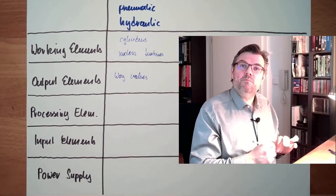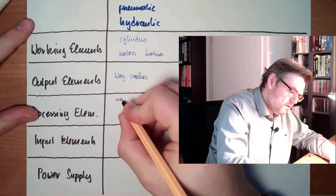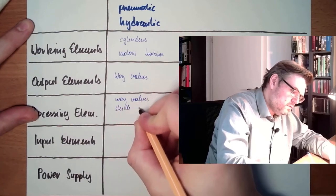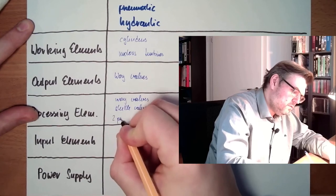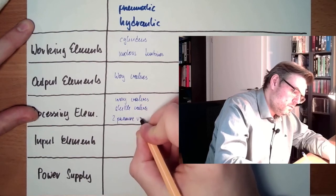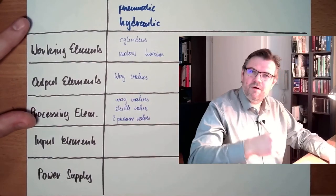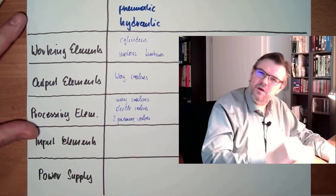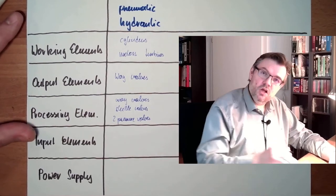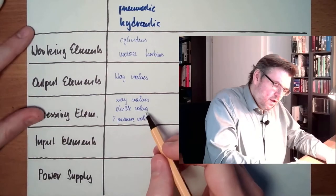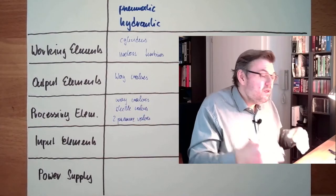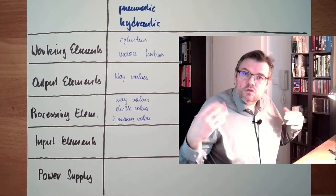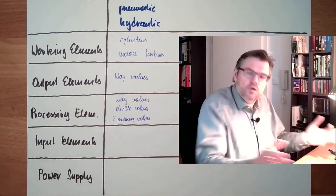Then there are process elements. This might also be way valves, shuttle valves, two pressure valves, pressure control valves, check valves, non-return valves. Process elements, doing the logic, realizing the logic. They are usually smaller, tinier, and whatever is the outcome will then switch, usually if it's a pure pneumatic or hydraulic control, they will switch the way valve, which is operated pneumatically or hydraulically, and the cylinder does its job.